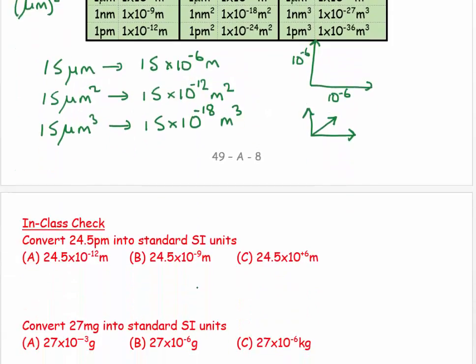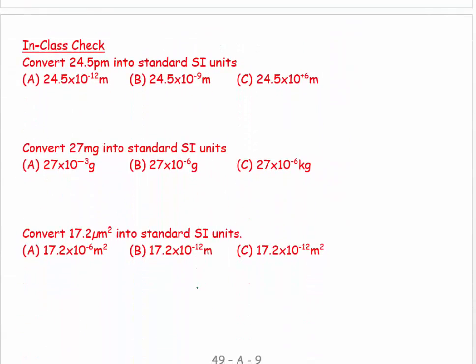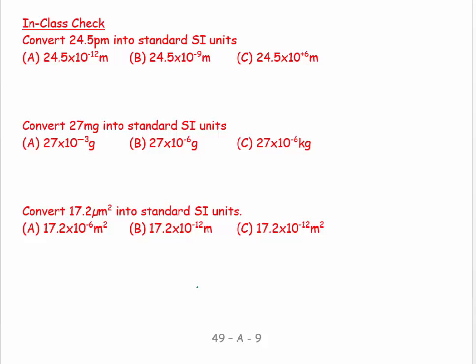Let's do some in-class checks. You can stop the video and check to see if you get the same answer as me. 24.5 picometers: pico is 10 to the minus 12, and it's going to be meters, so 24.5 times 10 to the minus 12 meters would be answer A.